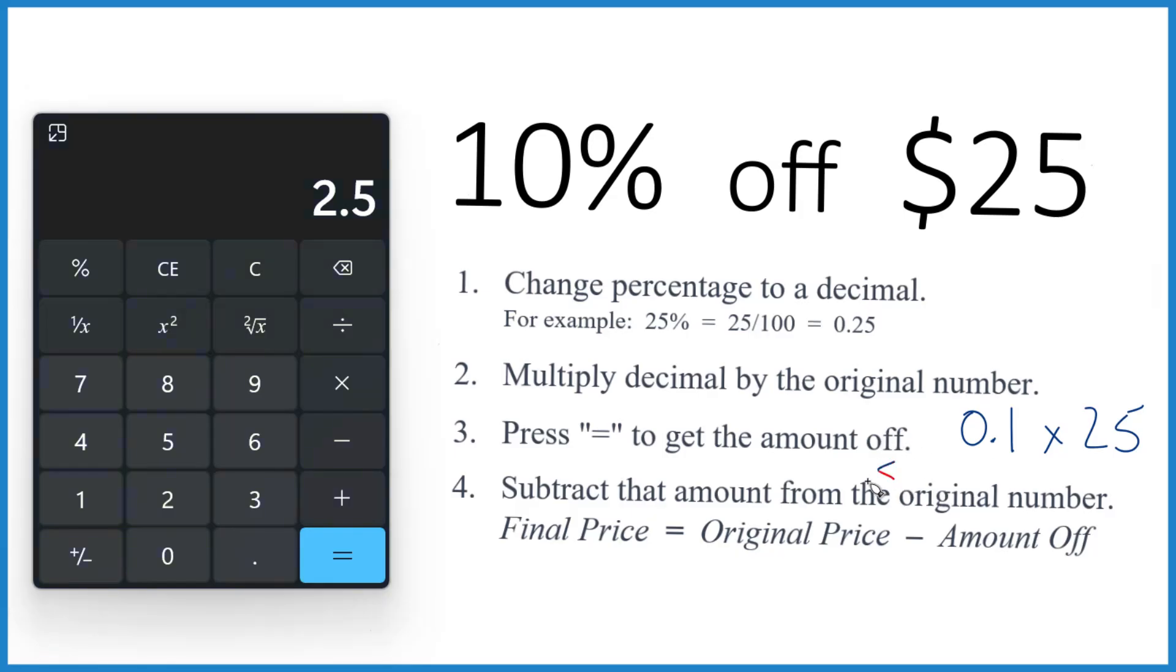And what that means is that's $2.5, or $2.50, and that's how much off. So that's how much we save when we take 10% off of $25.